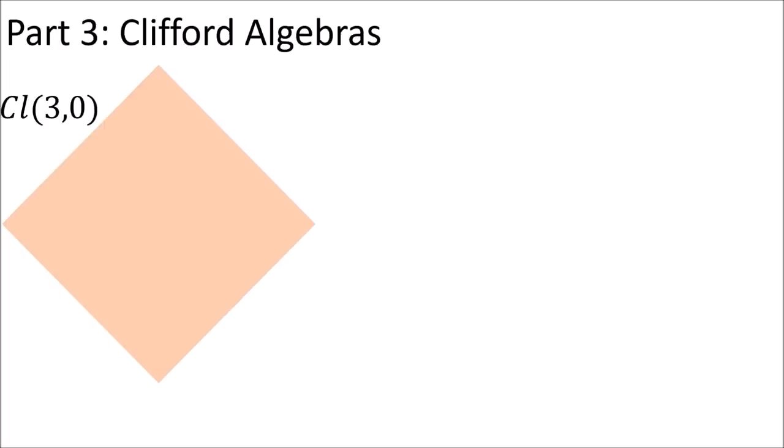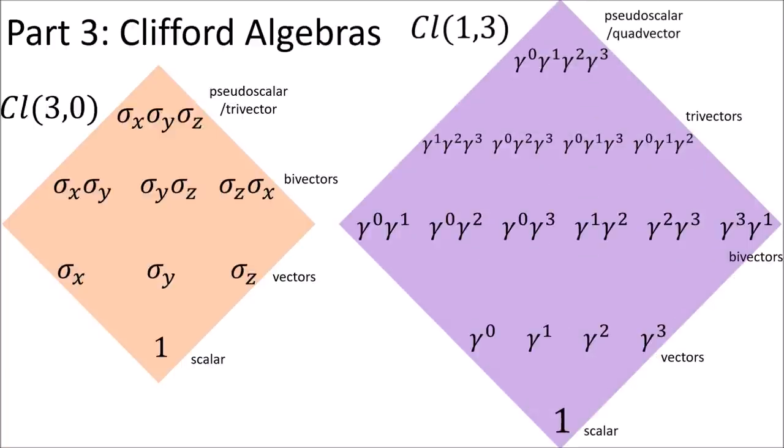In part three I talk about Clifford algebras which are algebras where we can combine scalars, vectors, bivectors which are like planes, and trivectors which are like cubes. There's also a Clifford algebra for four-dimensional spacetime which has four vector directions instead of three.